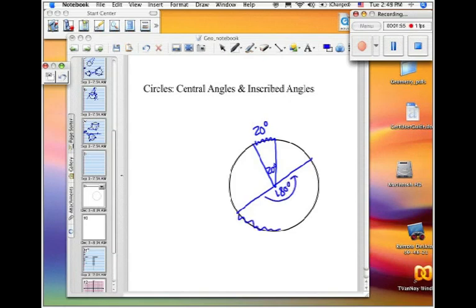then, obviously, I'm going halfway around the circle, and that arc is 180 degrees. In that case, it's called a semicircle. Semicircles are also halfway around the circle, resulting from a central angle of 180.